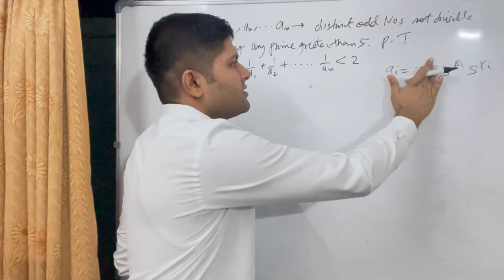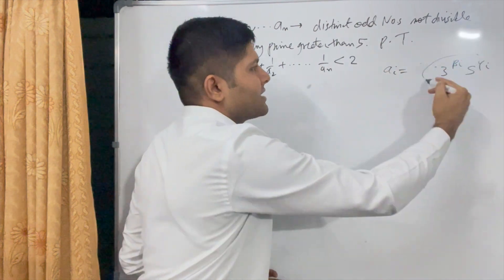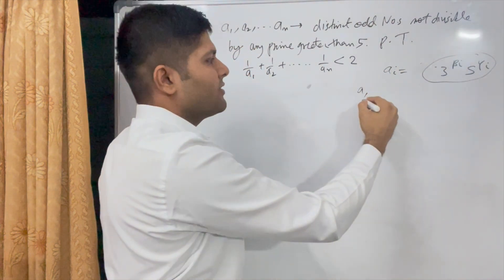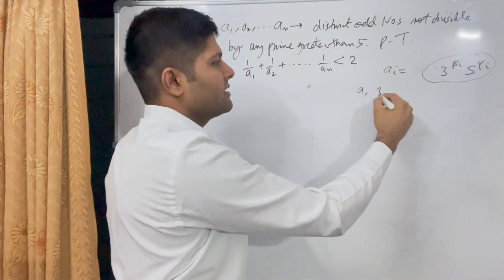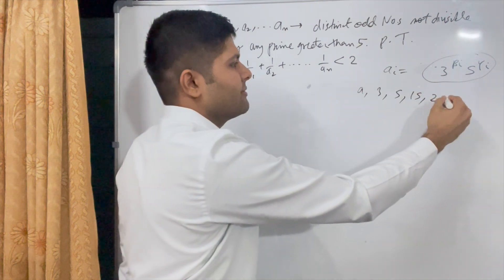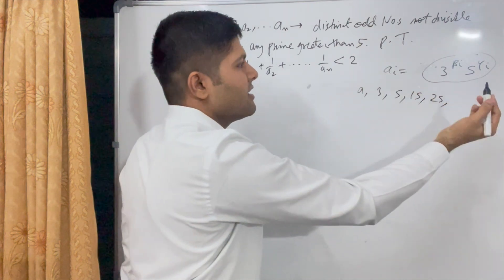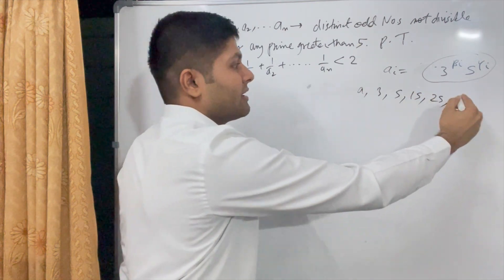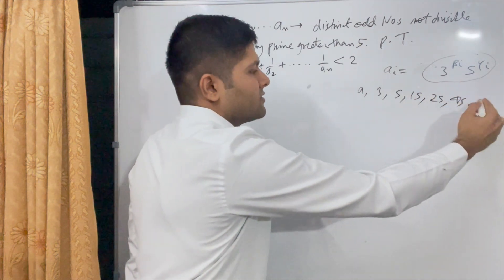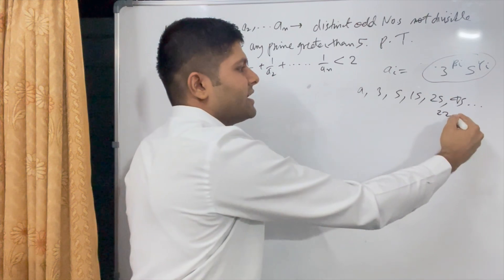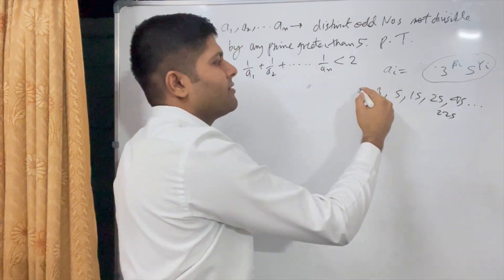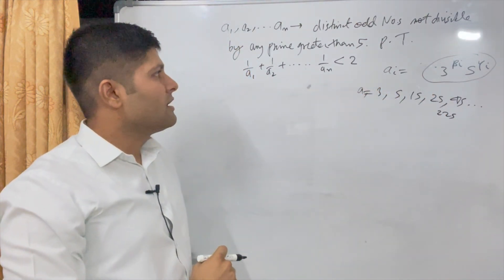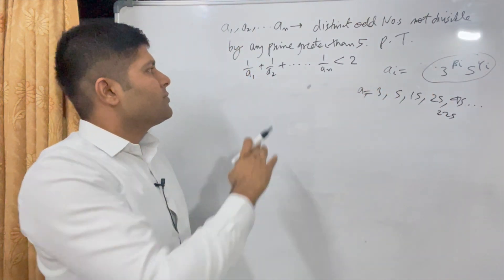So all of these numbers are of the format 3^βᵢ · 5^γᵢ. For example, the numbers can be 3, 5, 15, 25, 45, 225 — these are all examples of numbers of this format. So we have to prove that the inverse summation of these numbers is less than 2.